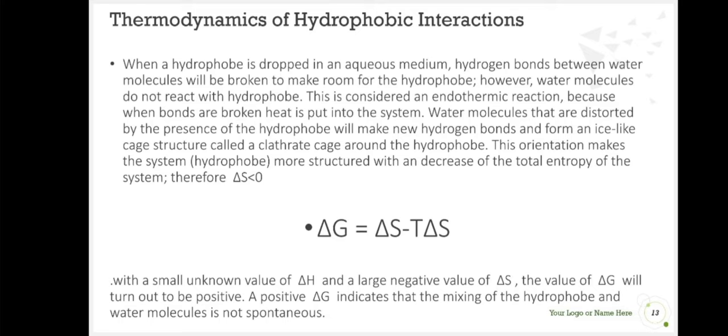Water molecules that are distorted by the presence of the hydrophobe will make new hydrogen bonds and form an ice-like cage structure called a clathrate cage around the hydrophobe. This orientation makes the system hydrophobe more structured with a decrease of the total entropy of the system. Therefore, the change in entropy is less than zero.